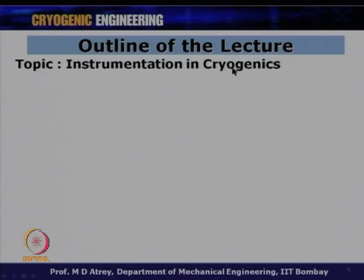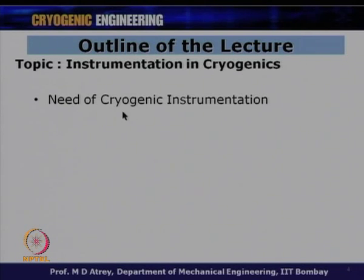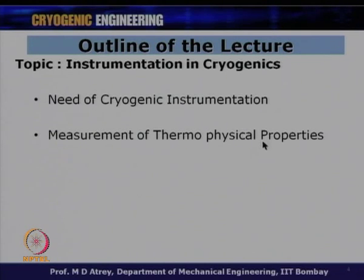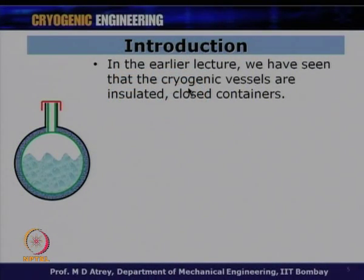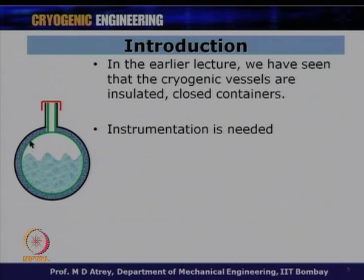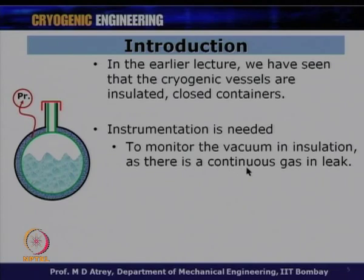The topic is instrumentation in cryogenics. Cryogenic vessels are insulated, closed containers. In order to monitor experiments in these containers—which hold a cryogen surrounded by insulation or vacuum—instrumentation is required. It is needed to monitor the vacuum in the insulation, since there is a continuous gas leak. The vacuum between the inner and outer vessel must be monitored because the boil-off of the cryogen depends on this vacuum.